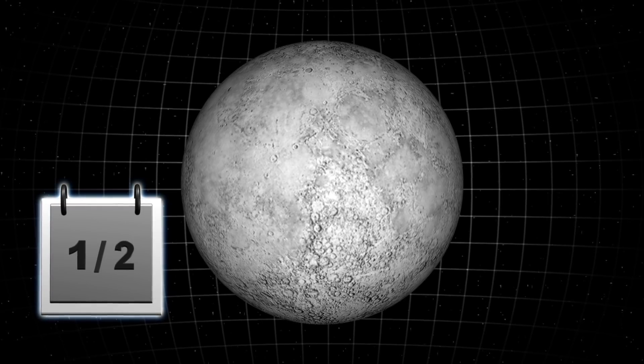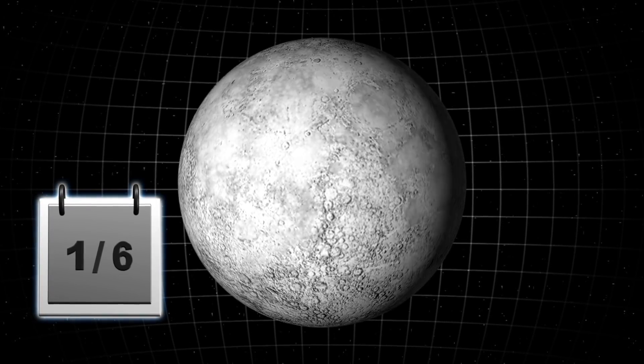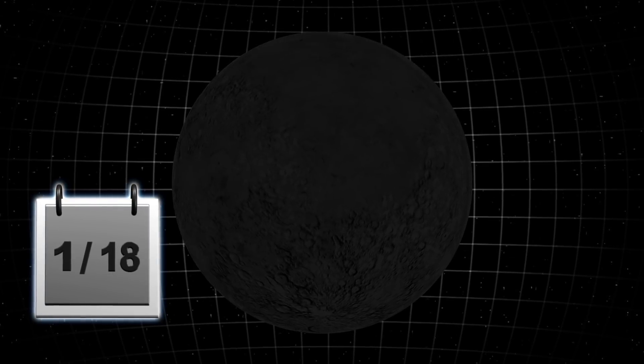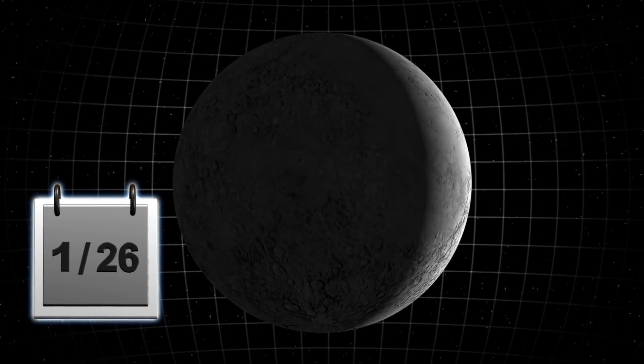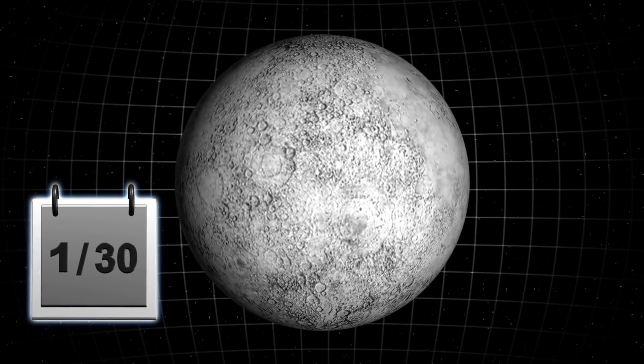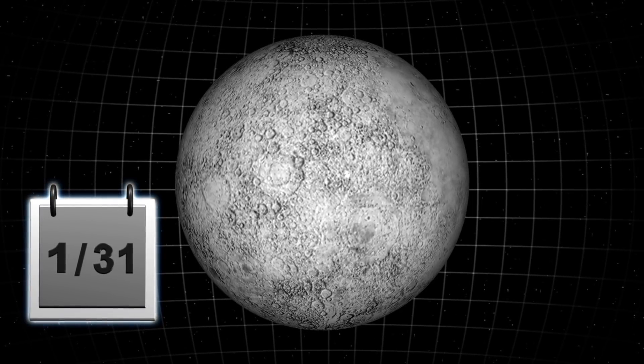Blue moons occur when there are two full moons in a month, usually at the beginning and very end. On January 31, the lunar eclipse at the end of January will coincide with a blue moon for the first time in 152 years.